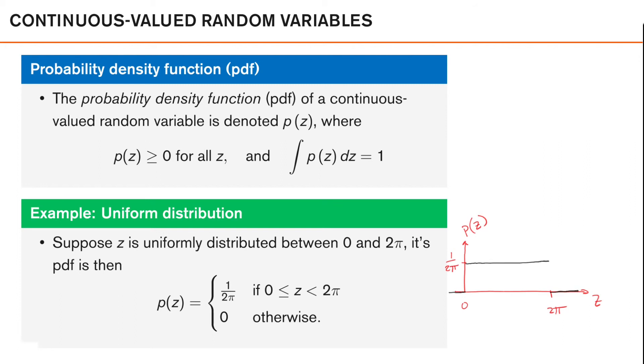If we want to relate a probability mass function to the probability density function, we can consider the discrete valued random variable describing the event that z is in some interval A. So we have some interval here, which we call A, and we want to know if z is within this interval.